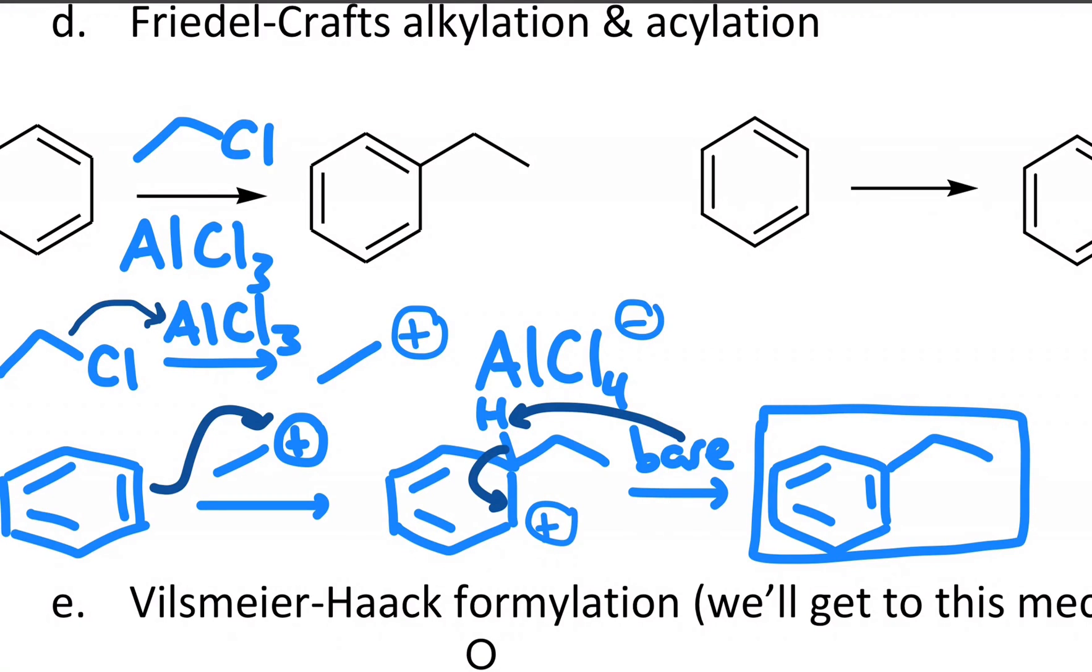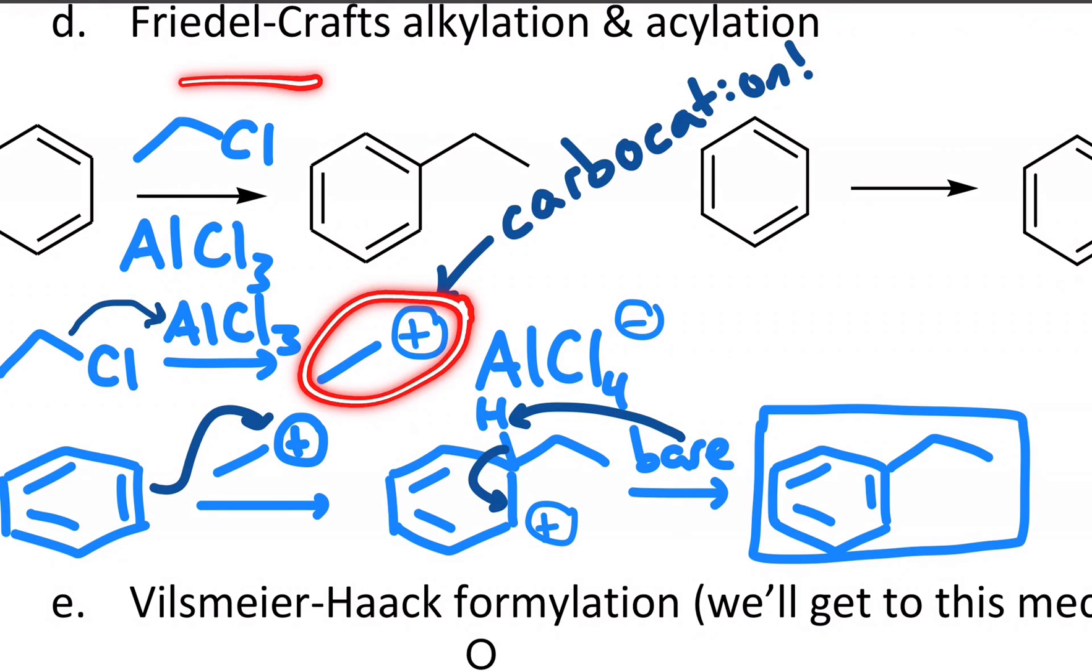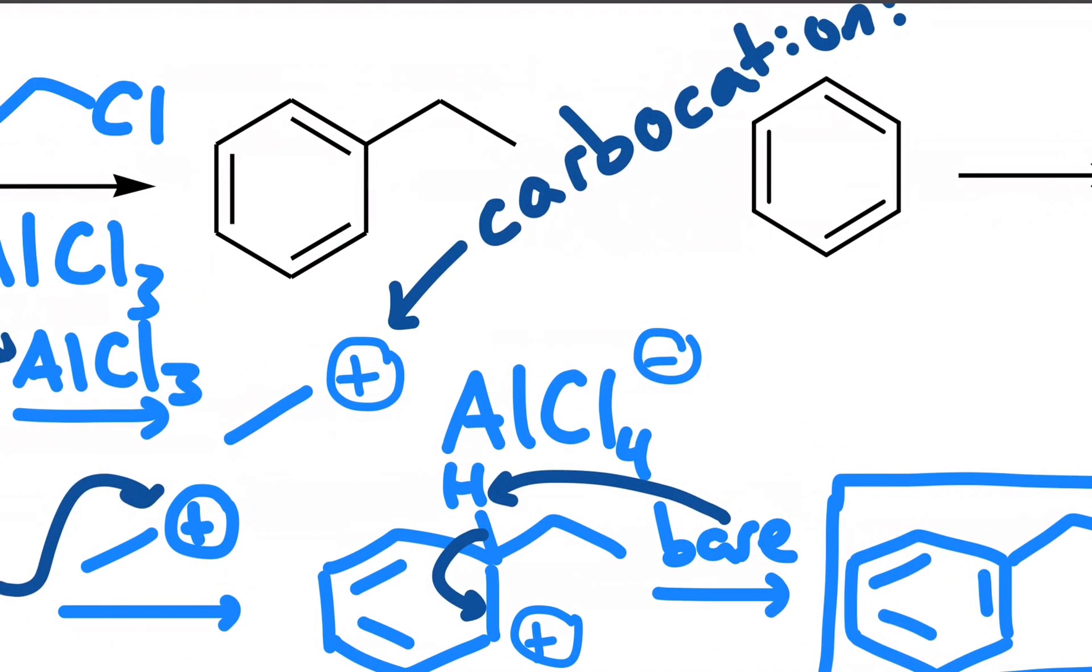Now notice when we do this, we make a carbocation. And the one I have here is not a good carbocation. That's a primary carbocation, which is terrible. That's also why it's so hard to form and get attacked by benzene. But luckily, this is the only cation that I could make from chloroethane. You could imagine doing this with some other molecule where a carbocation rearrangement can occur. And indeed that happens.